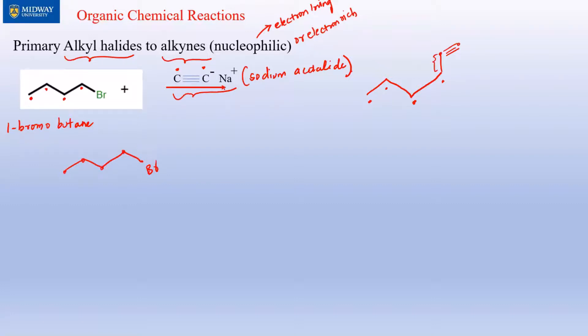This carbon contains the Br. The Na plus is a spectator ion. The C triple bond C is negatively charged. This whole thing attacks this carbon and in the process it kicks out the Br. It's a single step process. So basically that's how you end with this product. Again, make sure you don't add too many dots. This is how the product would have ended up.